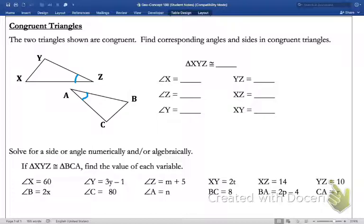And it also looks like angle C is maybe a little bit bigger angle, so it's going to match up with angle Y. And that leaves angle X, which appears to match up with angle B. Now, with that, I'm going to go over here and it says triangle XYZ is congruent to what?